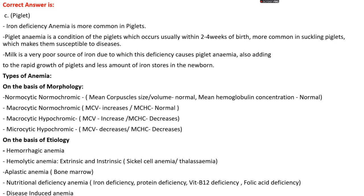Anemia is classified on the basis of morphology and etiology. On the basis of RBC morphology, there are four types: normocytic normochromic anemia, where RBC size and hemoglobin concentration are both normal; macrocytic normochromic anemia, where RBC size increases but hemoglobin concentration is normal; macrocytic hypochromic anemia, where RBC size increases and hemoglobin concentration decreases; and microcytic hypochromic anemia, where RBC size decreases and hemoglobin level within RBC is also low.